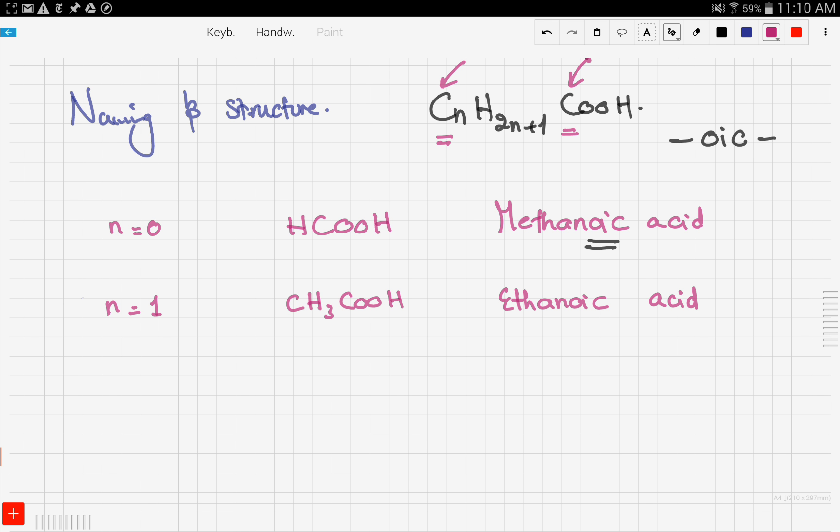Let's continue with the naming. Now let's move on to the third member, which is n equals 2. We get C2H5COOH, and this is going to be propanoic acid.